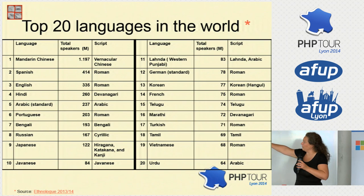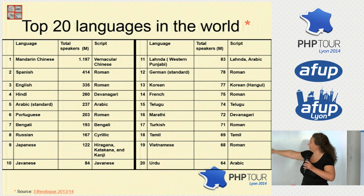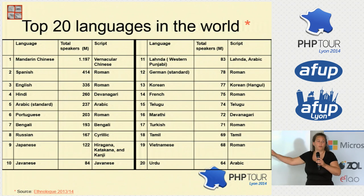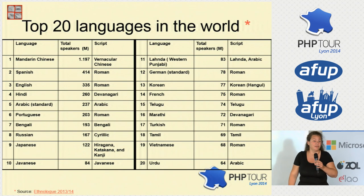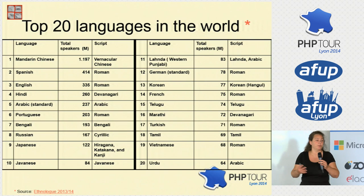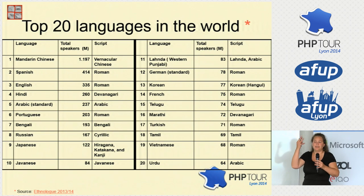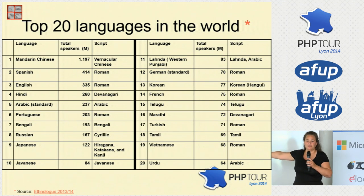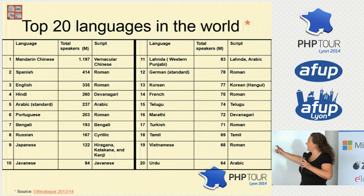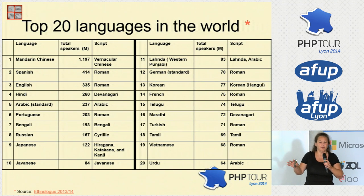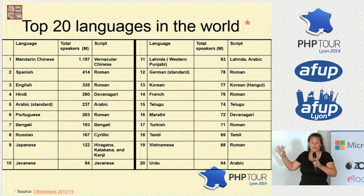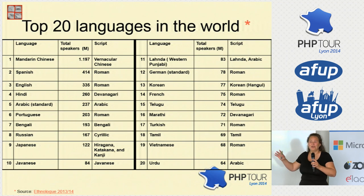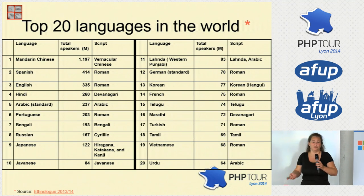Languages are written in different writing systems. If we look at the top 20 languages of the world and the writing systems in which they're written, out of the top 20, only seven are written in the Latin script. Thirteen are not. If you take the top 80 languages — out of the 7,000 — you reach 80% of the world population, but many are not written in the Latin script. You will run into problems if you don't use Unicode and UTF-8.